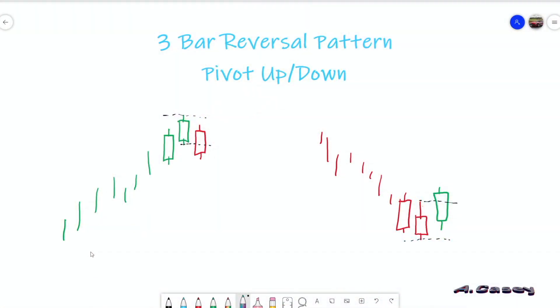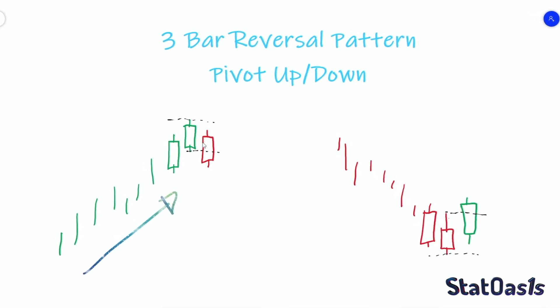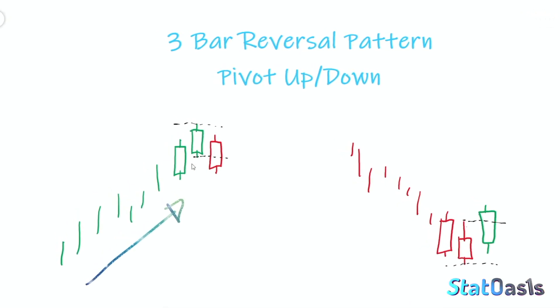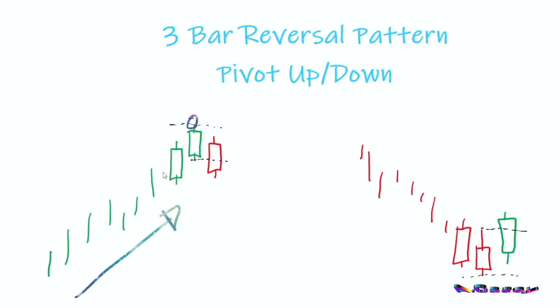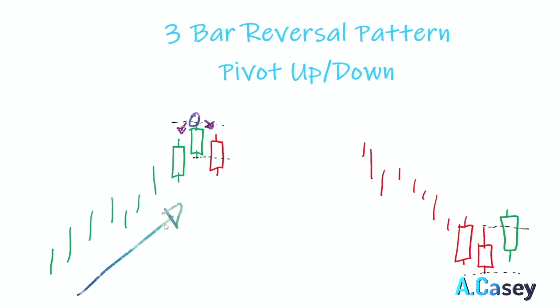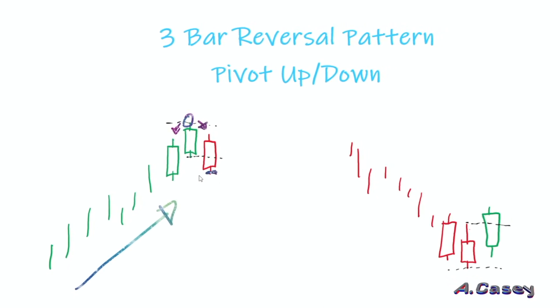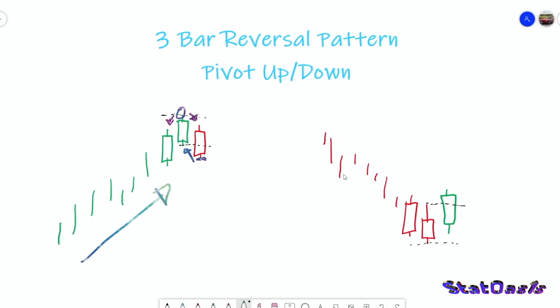The three-bar pattern is just a fancy way to say that we are looking for pivots. A pivot at the top in an uptrend consists of three bars: two bars up and one bar down, with the high of the middle bar higher than both adjacent bars, and the low of the current bar lower than the previous bar.